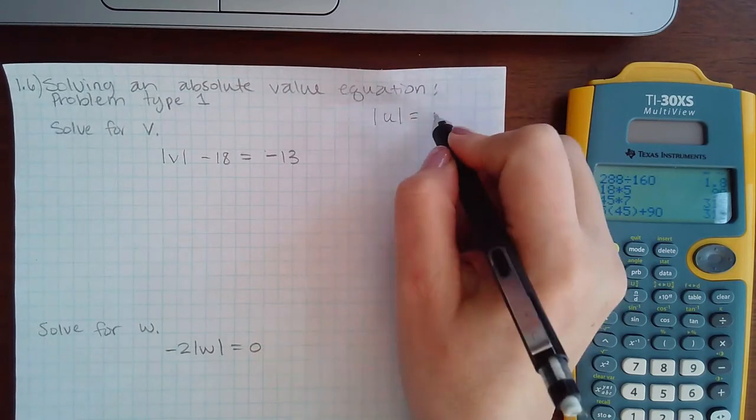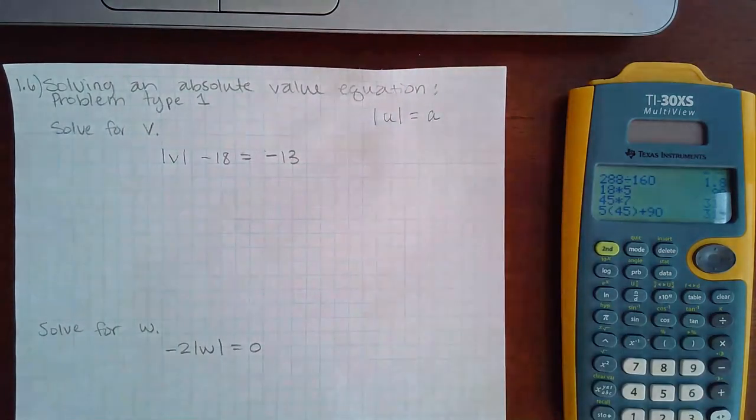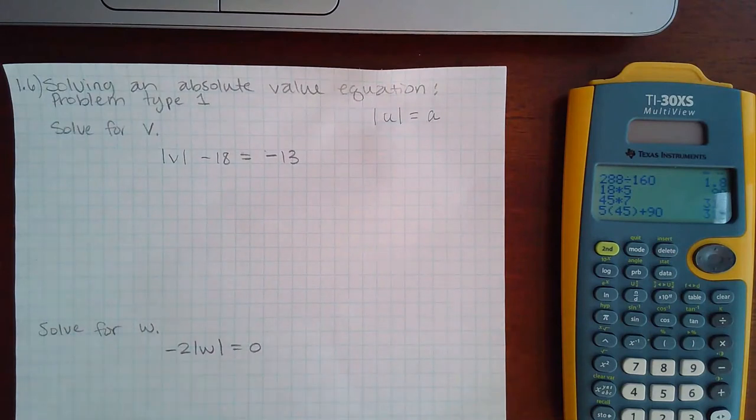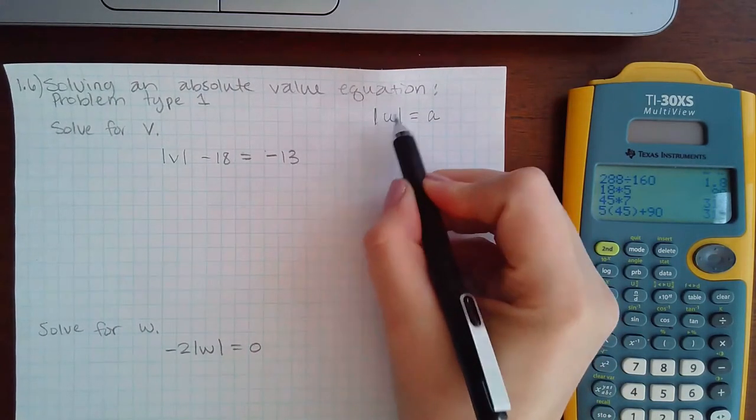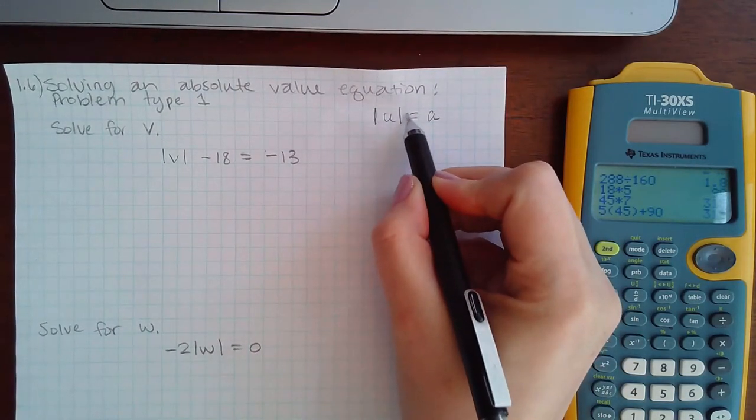...where |u| is equal to a number, and u can be a variable or a variable expression. Once you get the bars all by themselves with nothing being added, subtracted, multiplied or divided...